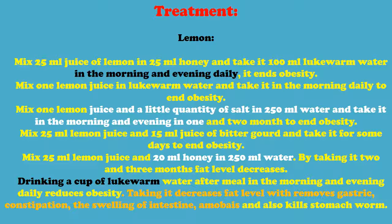Treatment — Lemon: Mix 25 milliliters of lemon juice and 25 milliliters of honey in 100 milliliters of lukewarm water and take it in the morning and evening daily — it ends obesity. Mix one lemon's juice in lukewarm water and take it in the morning daily to end obesity.